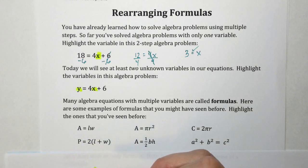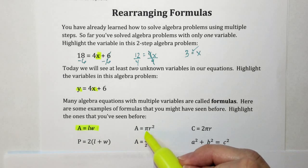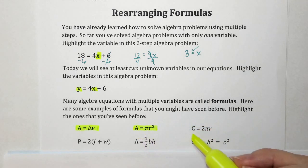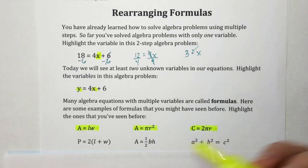A equals LW. This is area equals length times width. You might use this to find the area of a rectangle. How about A equals pi r squared? Anytime you see a pi symbol, you know you're working with a circle. This is the area of a circle. How about C equals 2 pi r? You know you're working with a circle. The C stands for circumference, which is the outside or perimeter of a circle. P, perimeter, equals 2 parenthesis L plus W. This might be how you would find the perimeter of a rectangle. A equals 1 half BH. Area equals 1 half base times height. That's the area of a triangle. A squared plus B squared equals C squared. And that is the Pythagorean theorem.